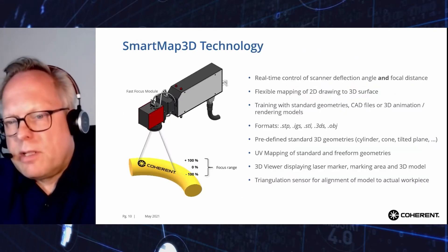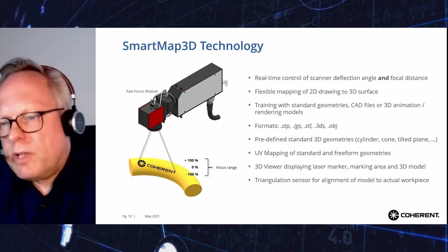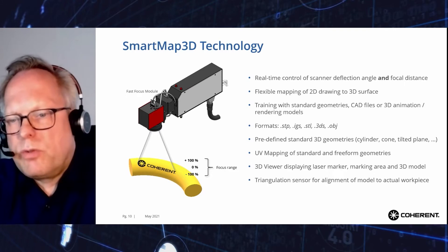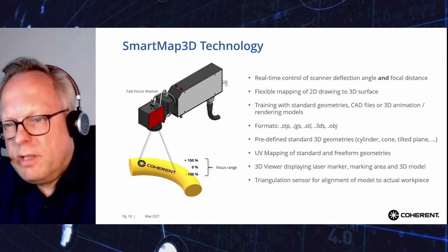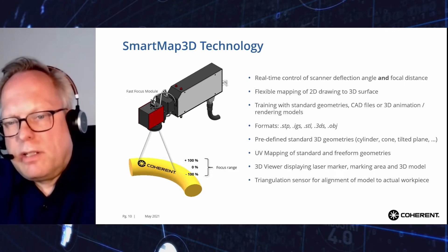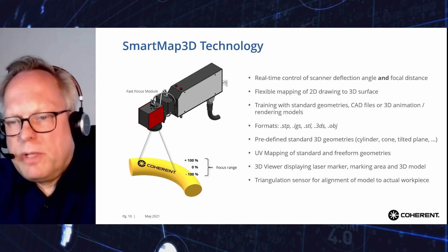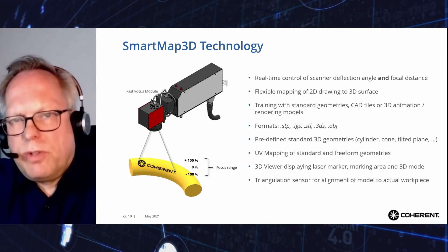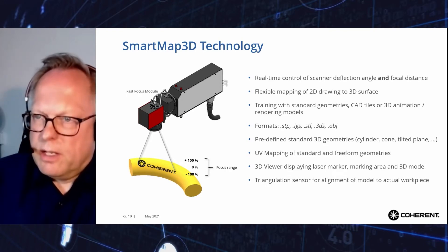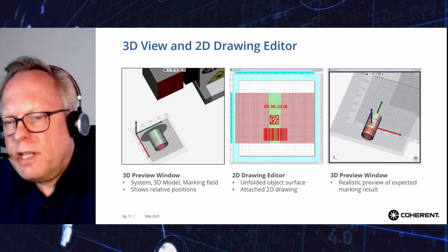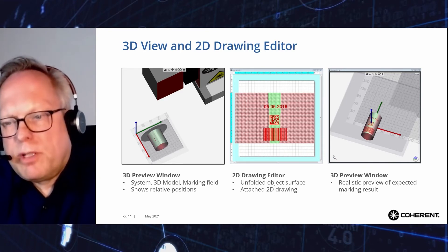The third example is Smart Map 3D. Smart Map 3D allows marking three-dimensional objects by modifying the marking layout to avoid distortions of the marking pattern and enables adjusting the vertical focus position in real time. Smart Map 3D is easy to use and offers a 3D preview editor. Spheres, cuboids, cylinders and cones are standard geometries available in the VLM software.